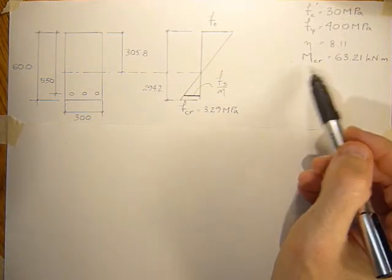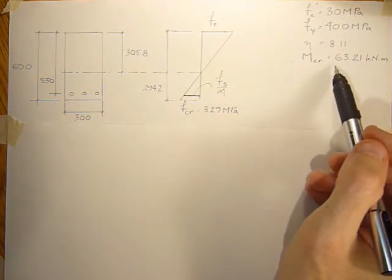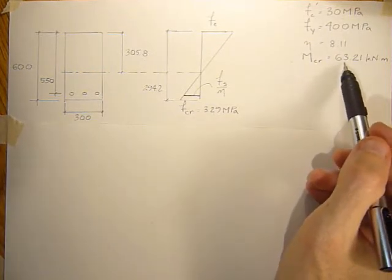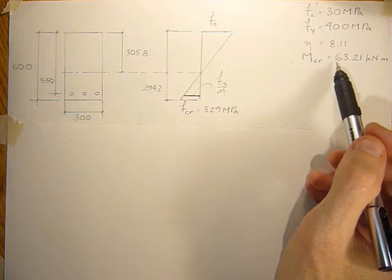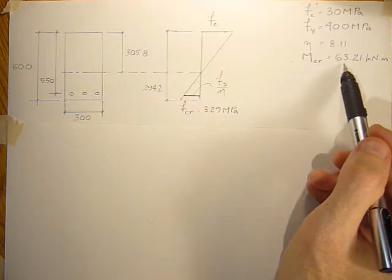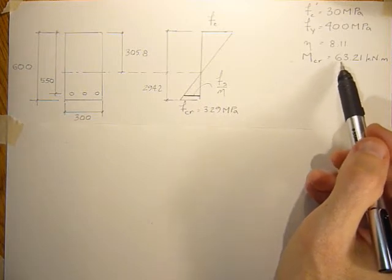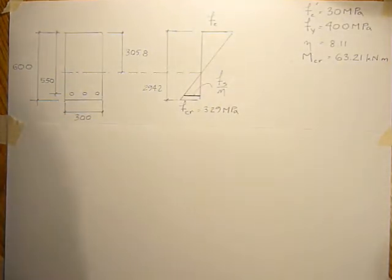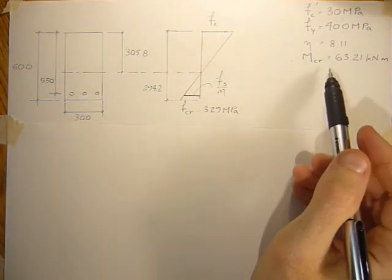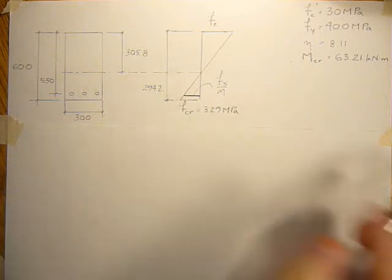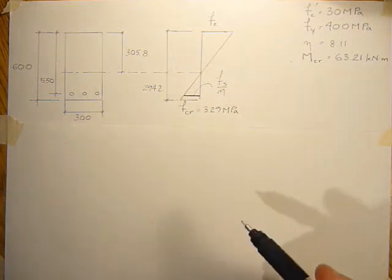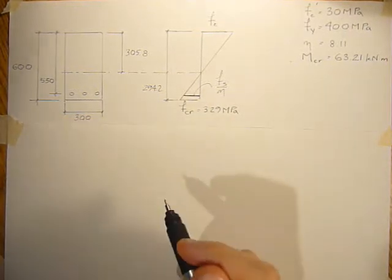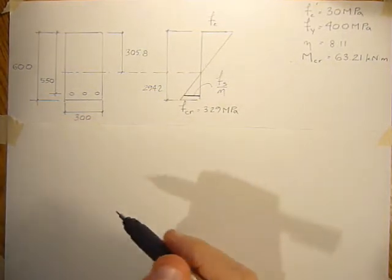So last time, in tutorial 1.2, we used MY over I theory to get the cracking moment. Today we're just going to use the force procedure and see if it comes up with the same answer — it should.